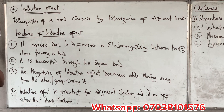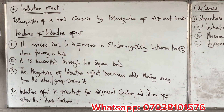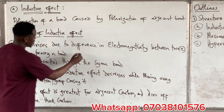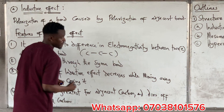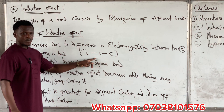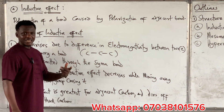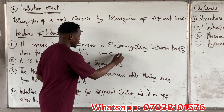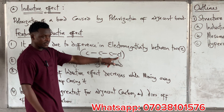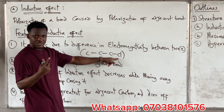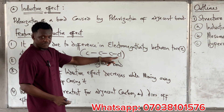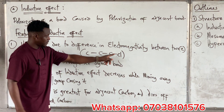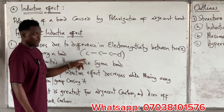Features of inductive effect: First, it is a permanent effect. Second, it arises due to the difference in electronegativity between two atoms forming a bond. For example, if we have a carbon chain, inductive effect cannot take place between identical carbon atoms. But if we add Cl at the end, since chlorine is higher in electronegativity than carbon, it will pull electrons towards itself, causing the other bonds to be polarized.